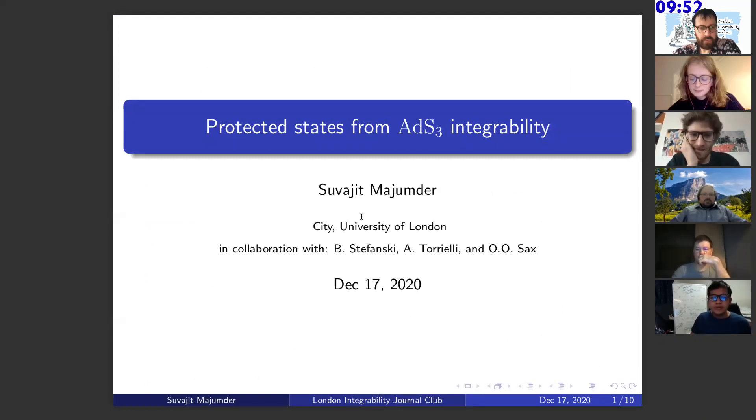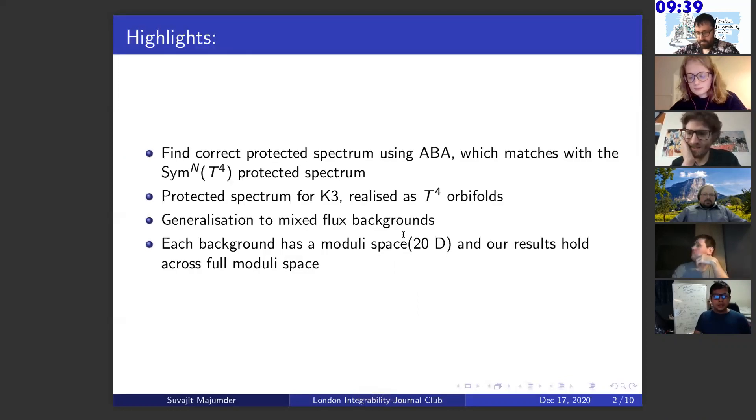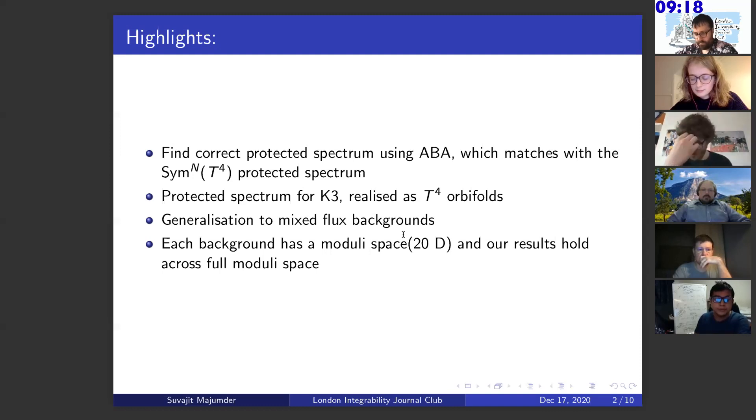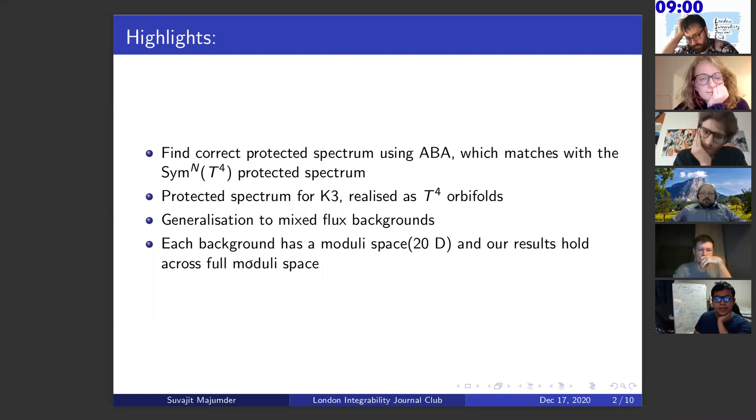Thanks for the opportunity to speak here. Today I will speak about a work that I have been doing in collaboration with my supervisor, Bogdan, and Alessandra and Lula. Let me begin by showing the highlights of what we have done. We started by computing protected spectrum in AdS-3, S-3, T^4 using algebraic Bethe ansatz and then match that to the protected spectrum obtained in symmetric orbifold of T^4. Then we generalize this to find the protected spectrum in K3, which are realized as T^4 orbifolds, and then also generalize it to mixed-flux backgrounds. The first part of this computation was in pure RR using relativistic variables and then generalize it to mixed-flux. And these results hold across the moduli space, which is 20-dimensional in each of these backgrounds. Those are the highlights.